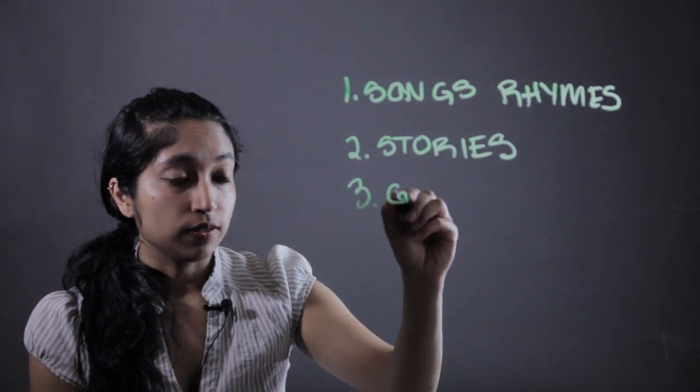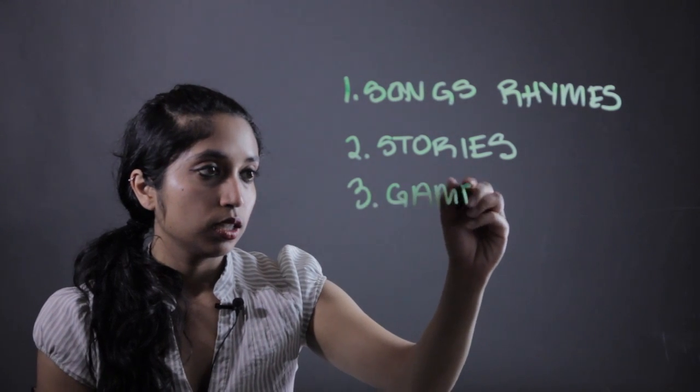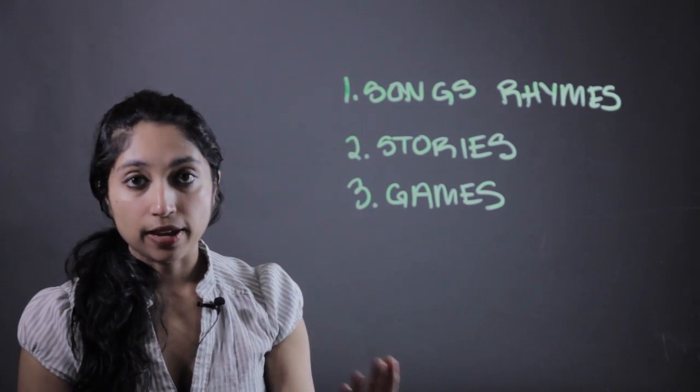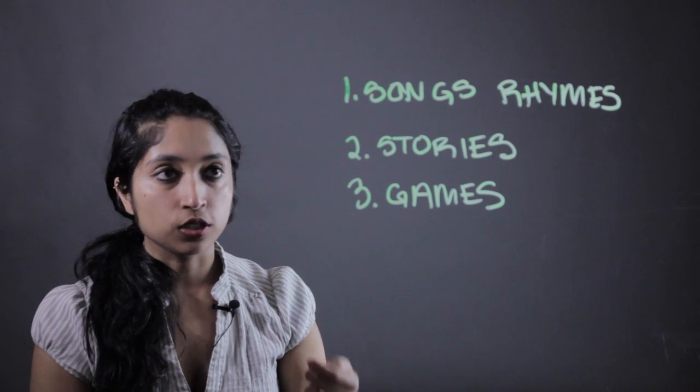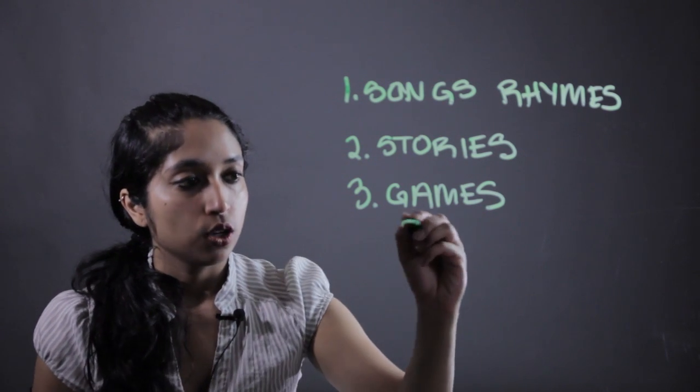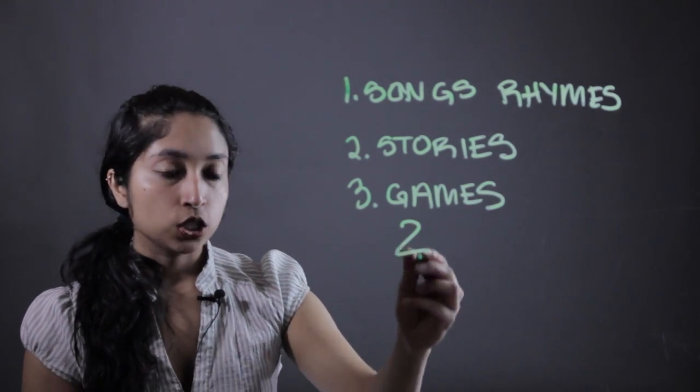Third thing is games and activities. With preschoolers, one of the things they have to do is learn number recognition. So not only know what the names of the numbers, but also recognize that the written out number two is two.